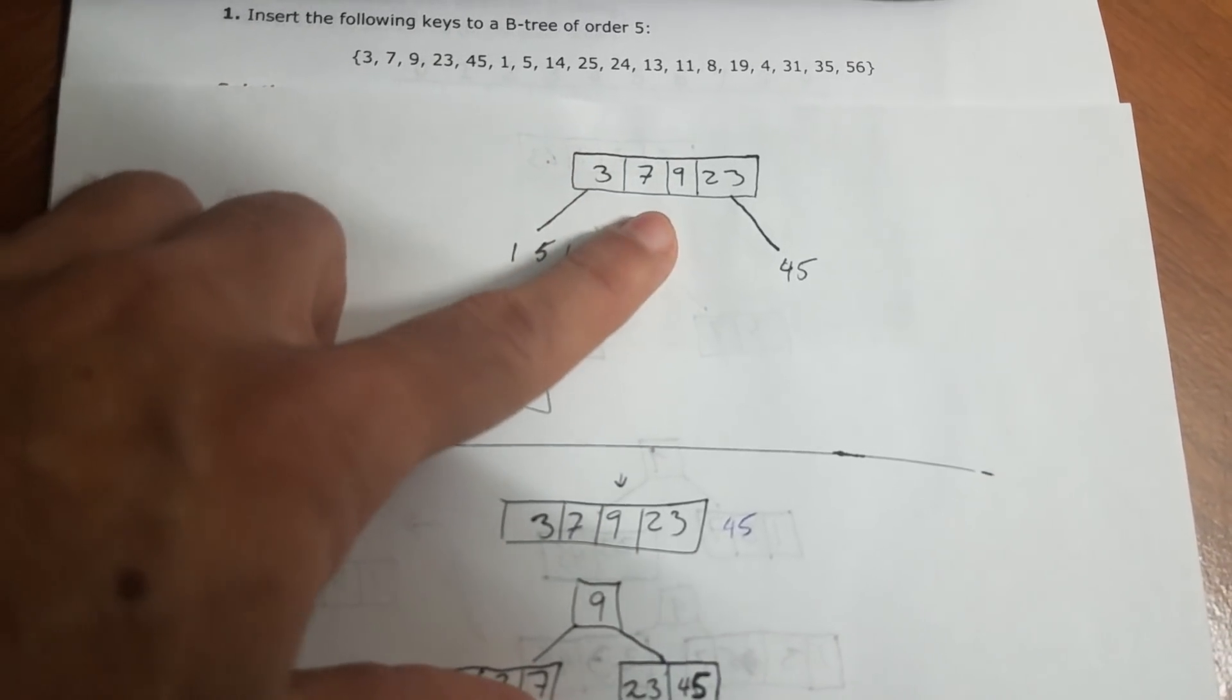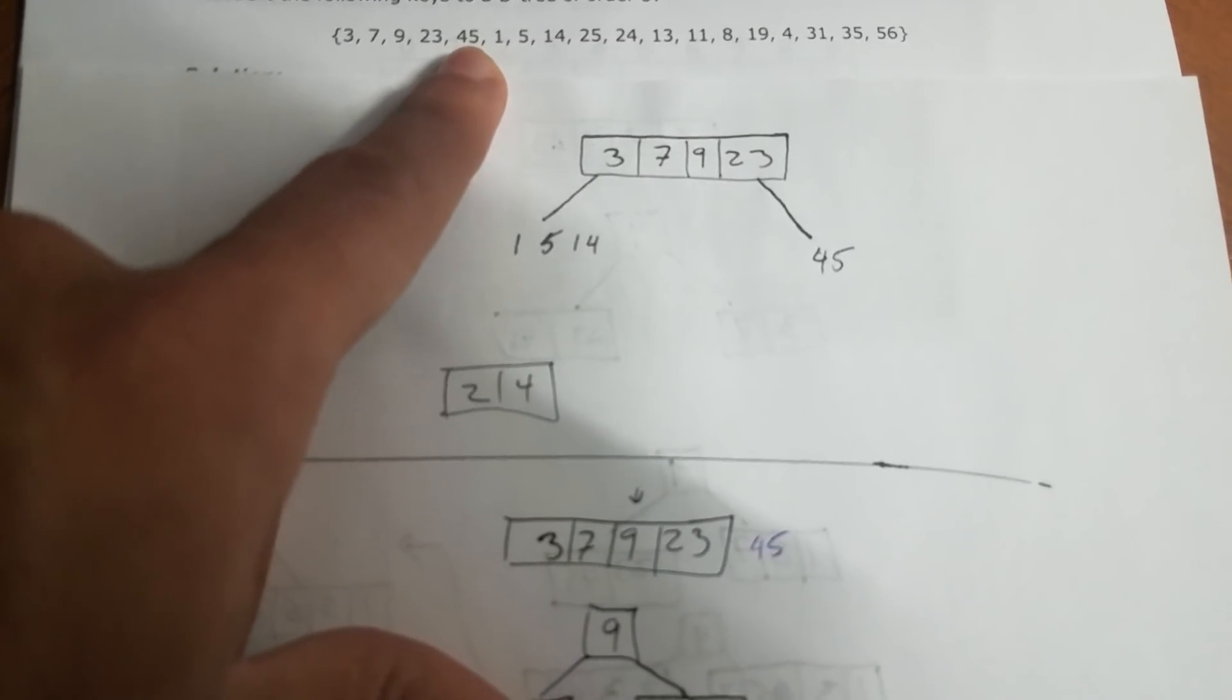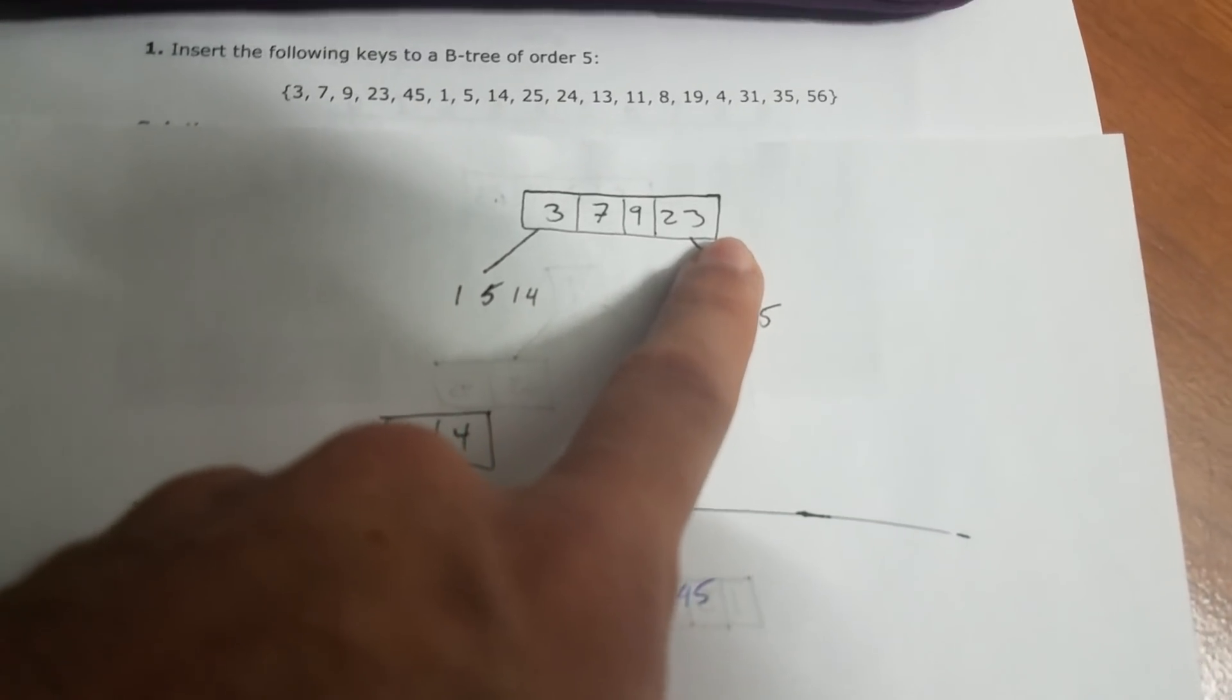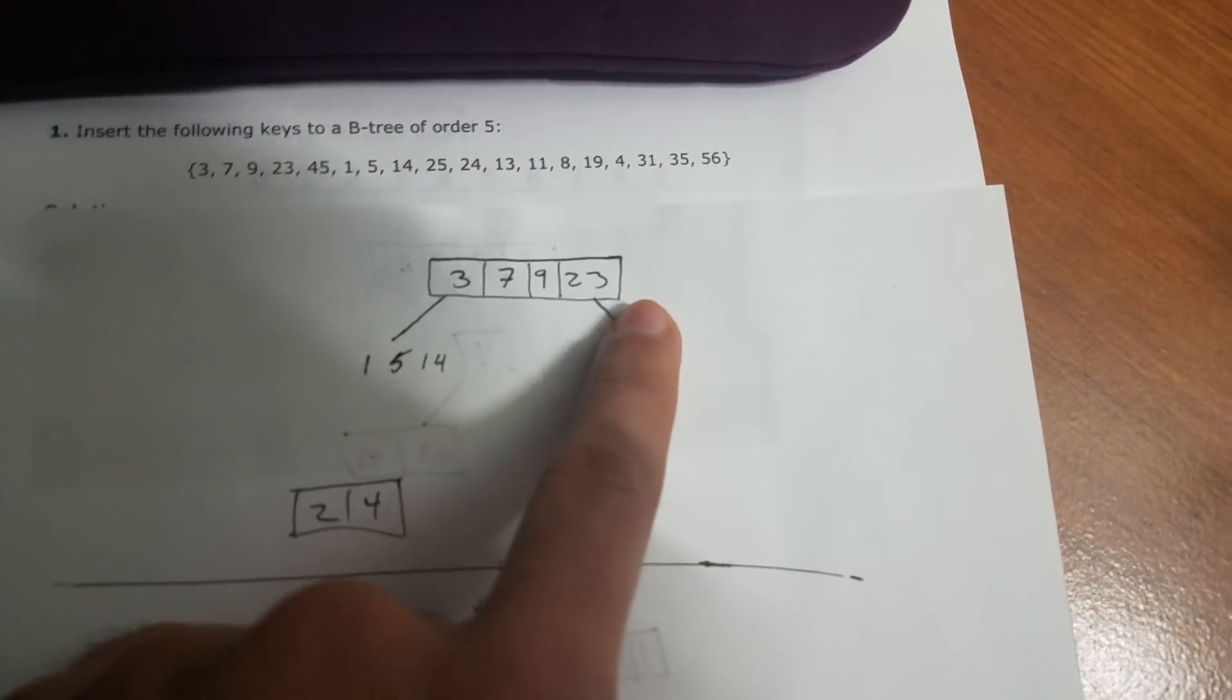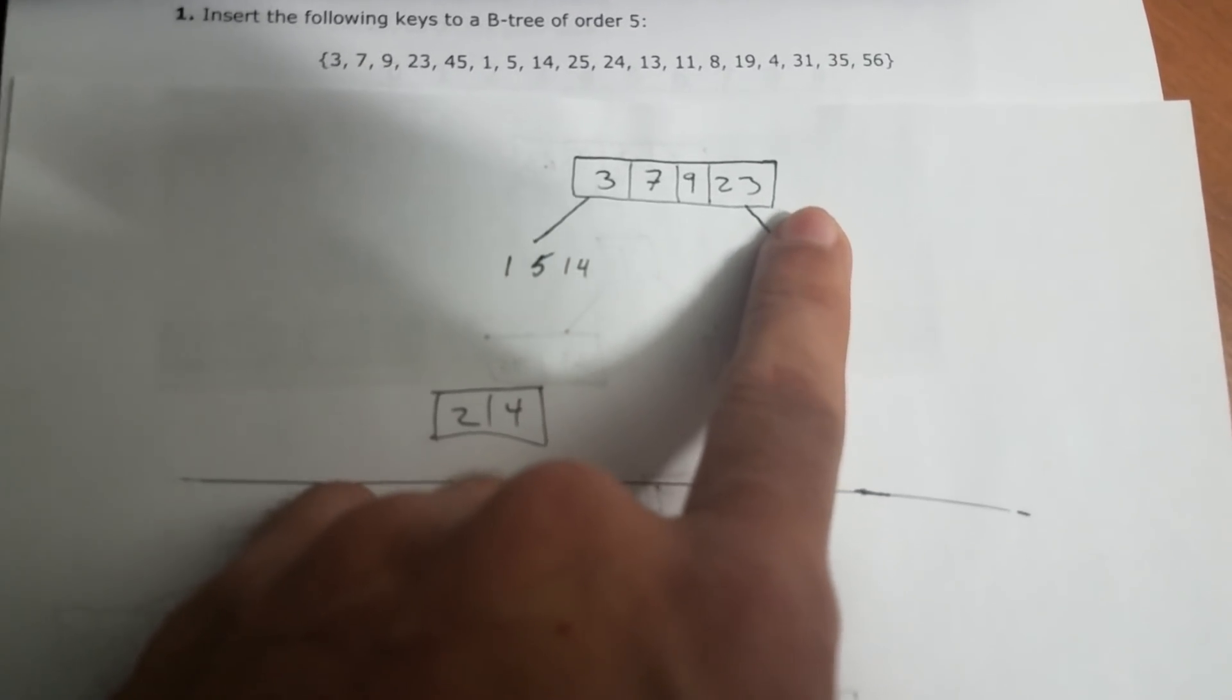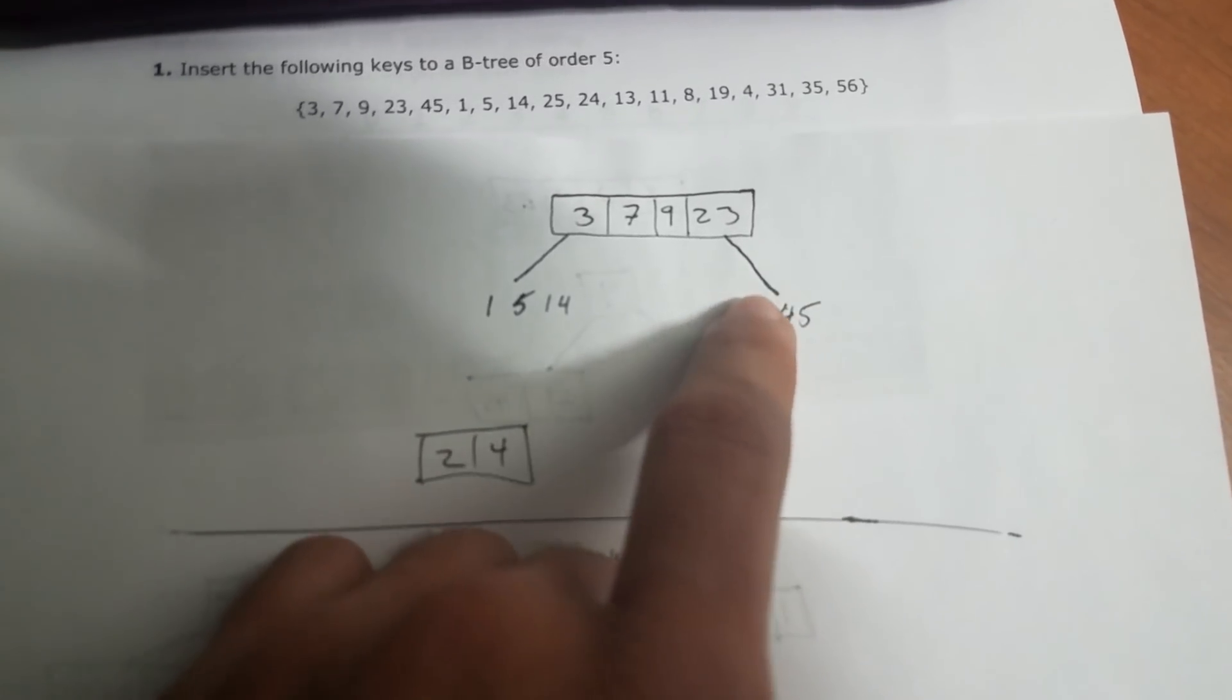Alright, so after you put the first four elements, you need to start the next one, which is 45. Now 45, you're going to put it here because it's greater than all of this, right? So if you put 45 here, there is a violation and you will not have four elements. You would have five. Therefore, you have to what I like to call branch out. So you would have to divide it.